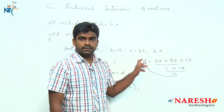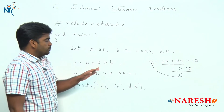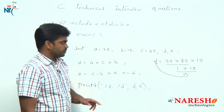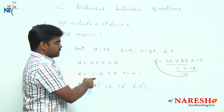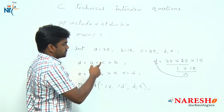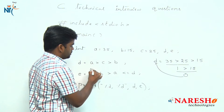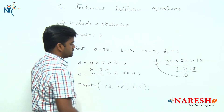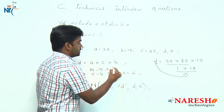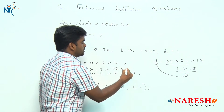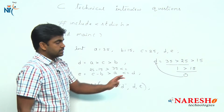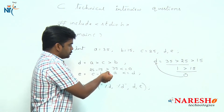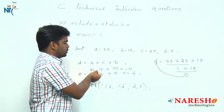Finally, the value 0 will be stored in d — that is the first expression result. Now, for the second expression, d value is already calculated as 0. Substituting the values: c value is 25 minus b value 15, is greater than a value 35, is less than or equal to d. Since d is already found to be 0, substitute 0 here.